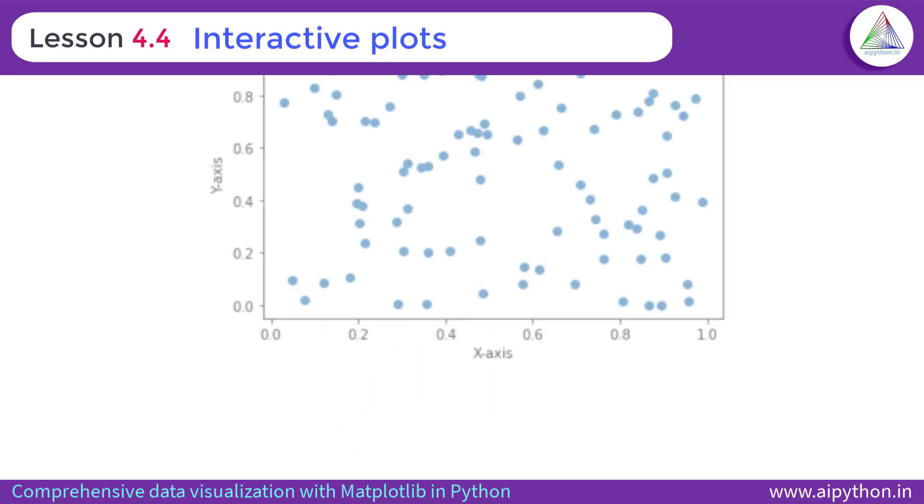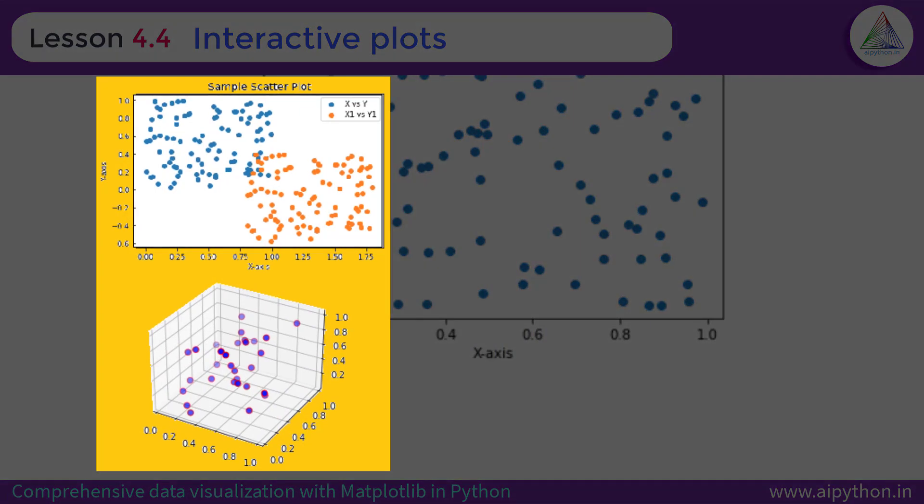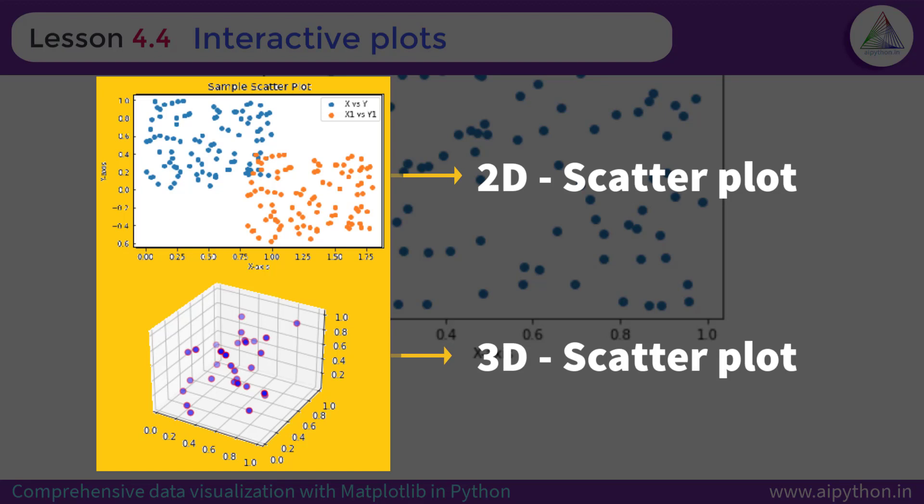So in the previous chapter, you had learned to generate a scatter plot. We are taking example of the same scatter plot which was static. So no interaction was possible in the previous graph. As you can see here, this graph which you have generated in the last lesson, that is pretty static. No interaction possible.